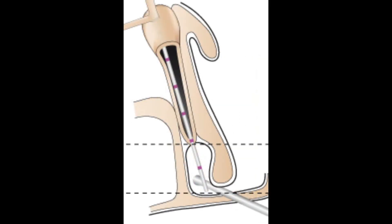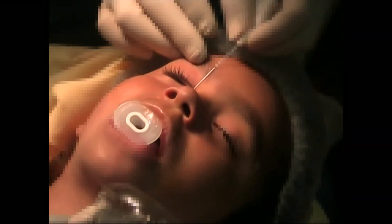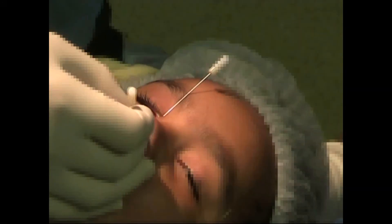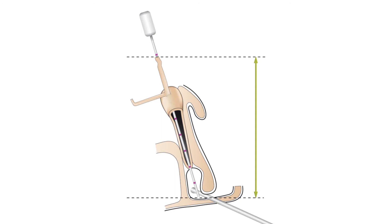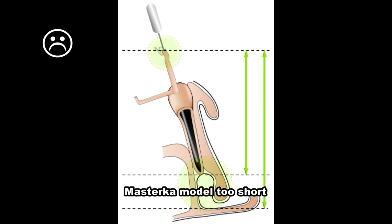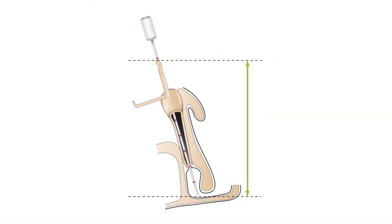If metal-to-metal contact is not achieved in the nasal fossa, it is possible that a false passage may have been created. To avoid failure, one should restart the procedure from the beginning. If metal-to-metal contact is still not achieved, it is better to change the method of intubation altogether or to postpone the procedure for a later date. It is also possible that the stent model selected may be too short if the fixation plug of the Master Ka is already in the punctum while the stent has not yet reached the site of mucosal stenosis. To avoid failure, a longer stent model should then be utilized.